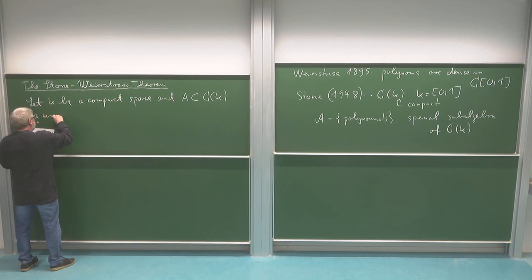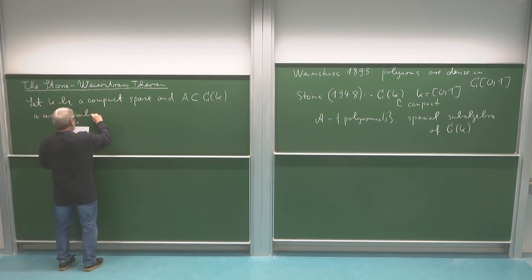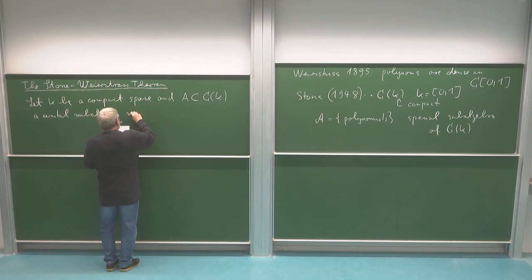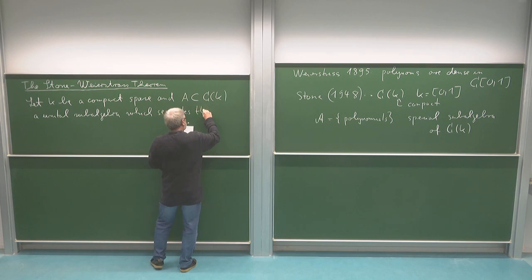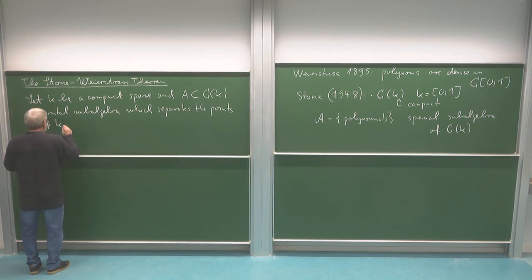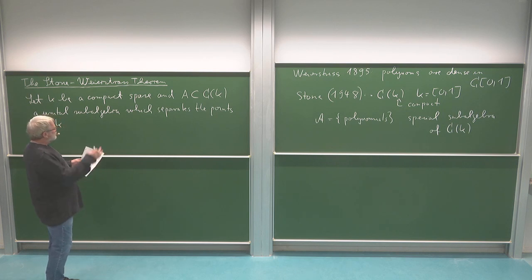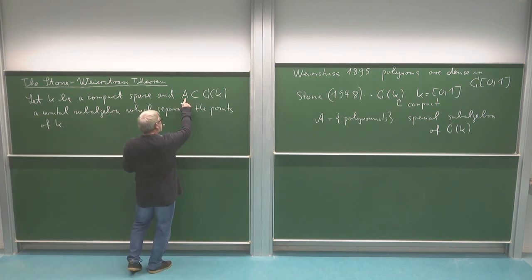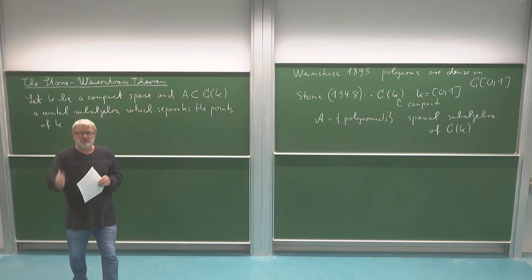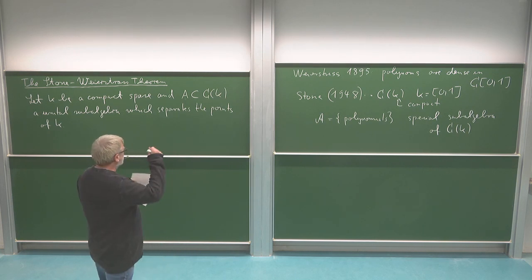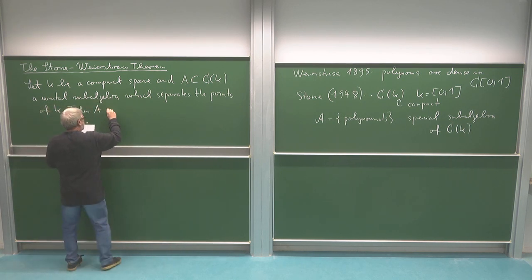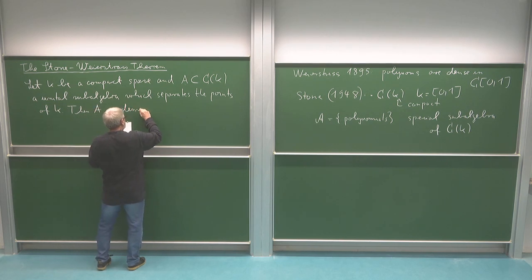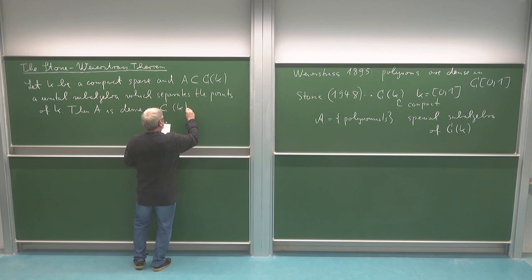Namely, it should be a unital subalgebra which separates the points of K. And that's all what I require of this. And then really, the conclusion from this very general setting is that then this subset A here is dense in C(K). Now, of course, dense with respect to the supremum norm. We consider C(K) as a Banach space equipped with the supremum norm. So then A is dense in the continuous functions of this set K.